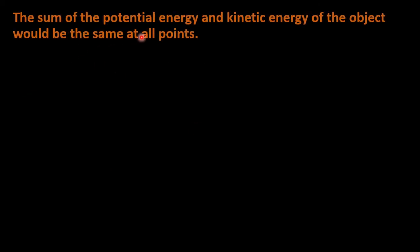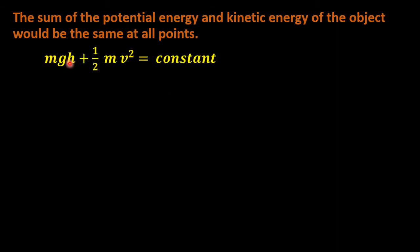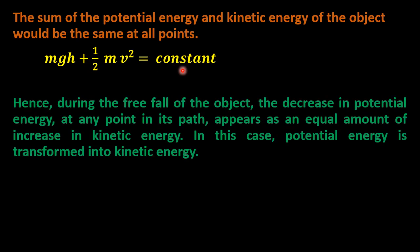From the activity we came to know that the sum of potential energy and kinetic energy of the object is the same at all points, so we can write: potential energy + kinetic energy = constant. Hence, during the free fall of an object, the decrease in potential energy at any point in its path appears as an equal amount of increase in kinetic energy. In this case, potential energy is transformed into kinetic energy.